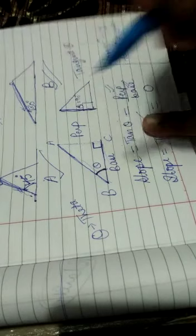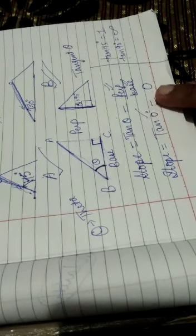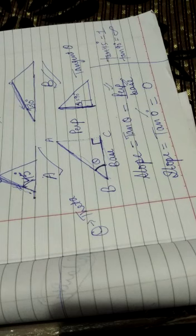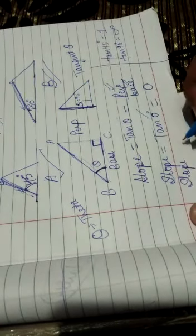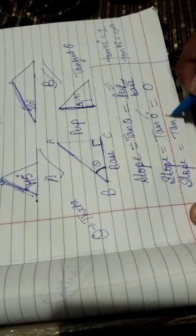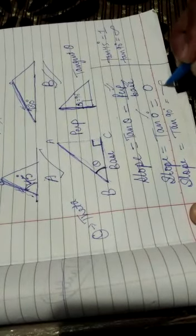So I think it's very easy. You can find the slope of this line as well. So slope will be equals to tan 90 degrees, which is not defined.